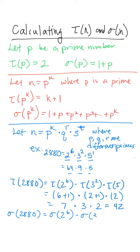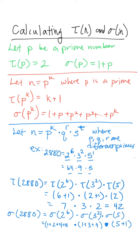Sigma of 2880 is sigma of 2 to the sixth times sigma of 3 squared times sigma of 5. Sigma of 5 is 5 plus 1, because those are the factors of the prime number. Sigma of 3 squared is 1 plus 3 plus 9. Sigma of 2 to the sixth, which is 64, is 1 plus 2 plus 4 plus 8 plus 16 plus 32 plus 64. This turns out to be 127 times 13 times 6, which equals 9,906. That's how we can add up those factors without knowing what all 42 factors are.